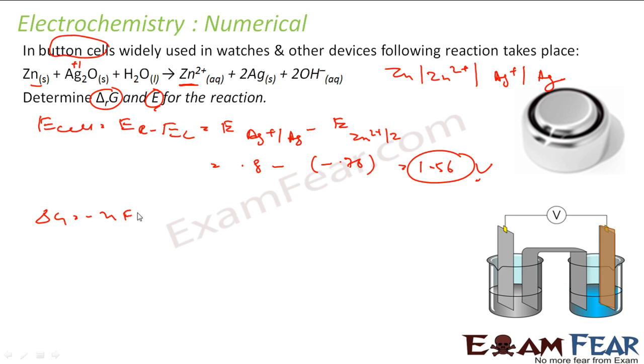ΔG is minus nFE°. And n is what? How many electrons? If you see there are 2 electrons. Zinc to Zn²⁺ is 2 electrons, 2 Ag⁺ becomes Ag is 2 electrons. So there is 2 electron transfer. Minus 2, n is 2.